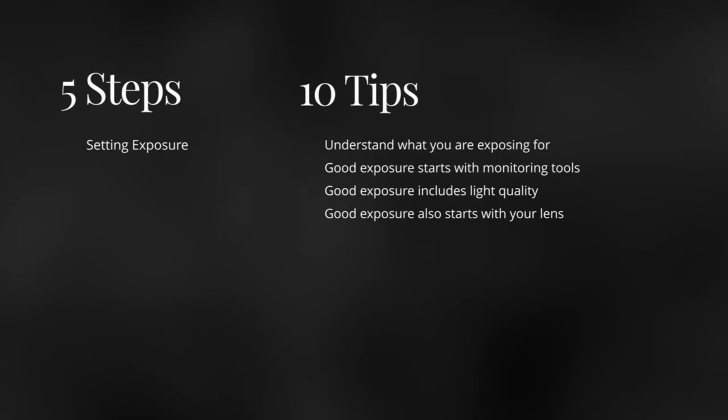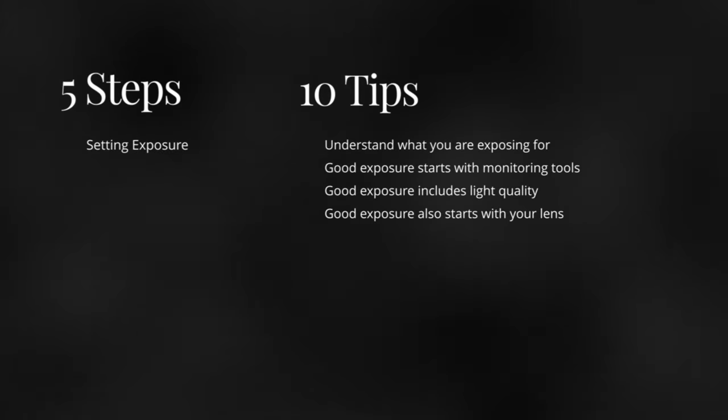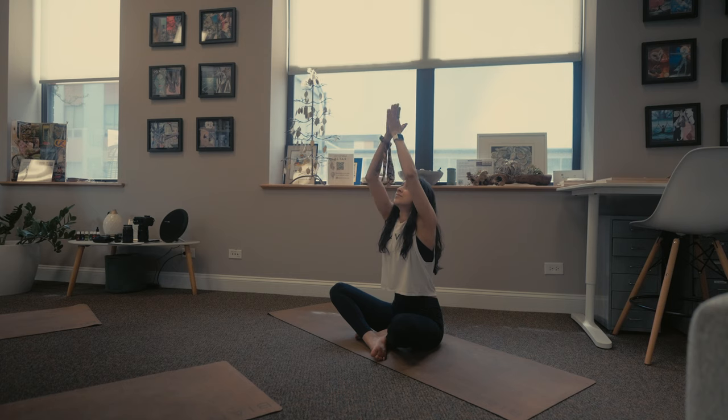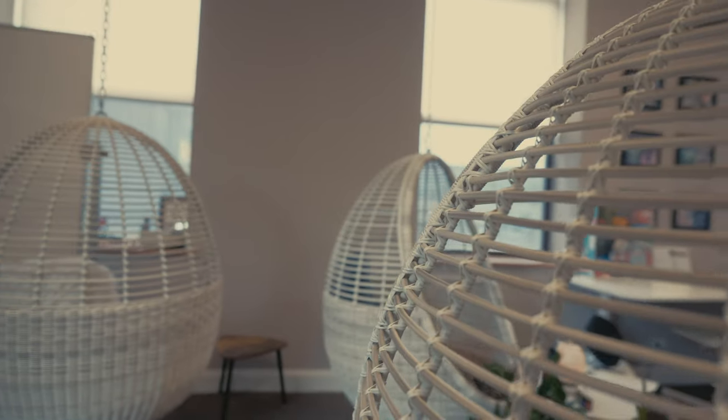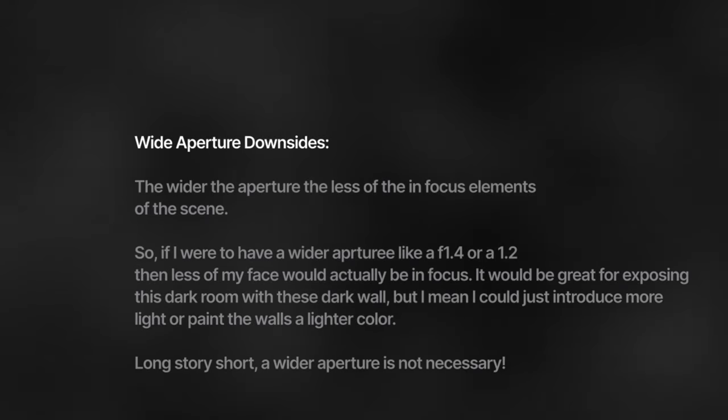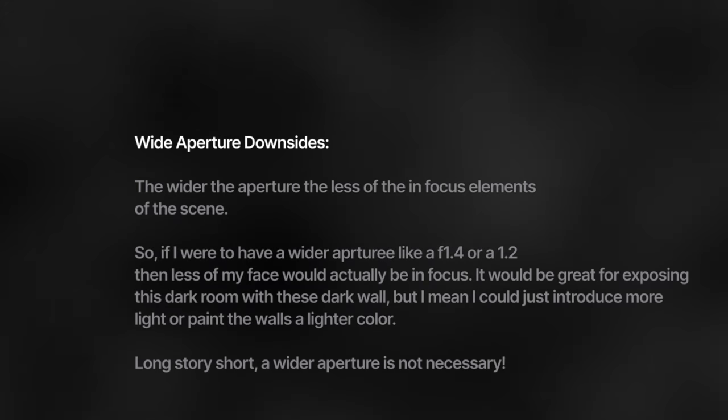Tip four: good exposure also starts with your lens. What is the quality of the glass you have and how much light can the lens let in to hit the sensor? Does it have a wide aperture in case you are in a low light situation like the one I'm in right now? I'm using the Sony 20mm f/1.8 in this scene. 1.8 is wide, but for this space, a 1.4 or 1.2 on a 20mm would be great — I would definitely grab it in a heartbeat.